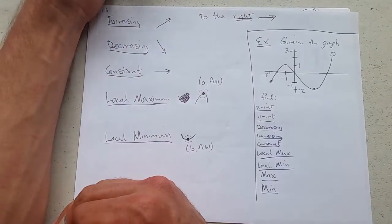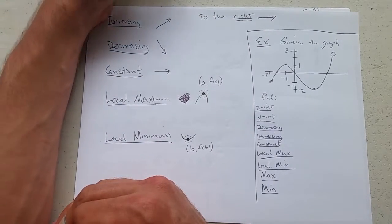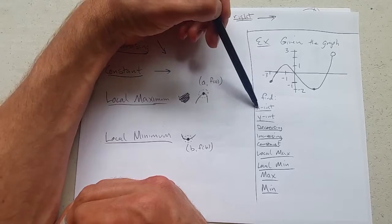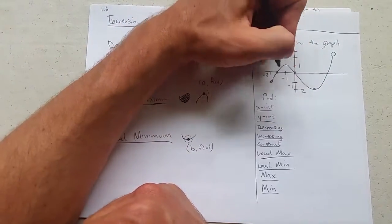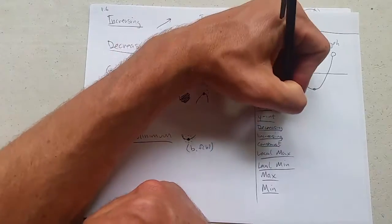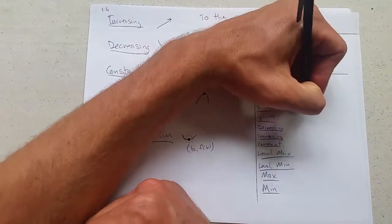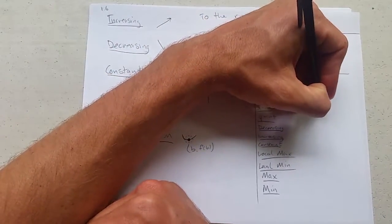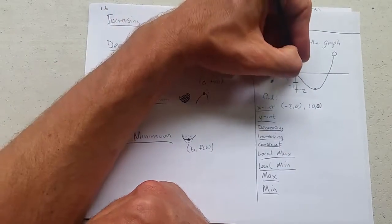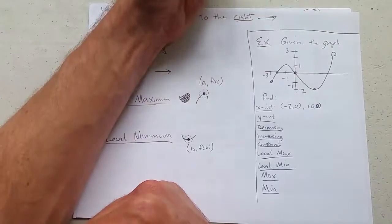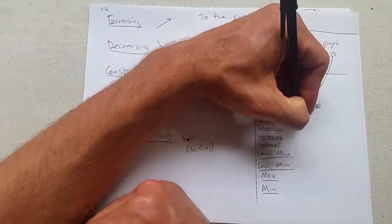So we're going to look at this example. This is just a graph here. And we're going to look at properties. So x-intercept, y-intercept. We talked about those earlier. X-intercepts, negative 2, 0, and 0, 0. So negative 2, 0, and 0, 0. Our y-intercept happens to be the same point as one of the x-intercepts. 0, 0.